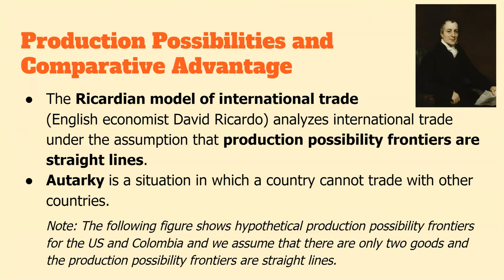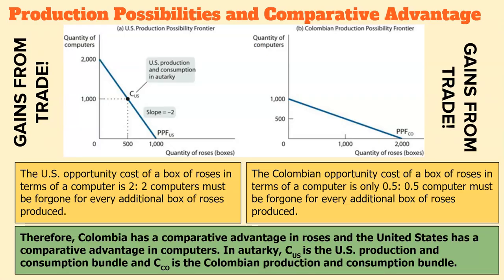In this hypothetical, we have Colombia and the U.S. looking at what they should produce. The U.S. has a lower opportunity cost in producing computers, where Colombia has a lower opportunity cost in producing roses. In terms of roses, it only costs Colombia 0.5 computers foregone for every box of roses, versus the U.S. where two computers must be foregone for every additional box of roses produced.